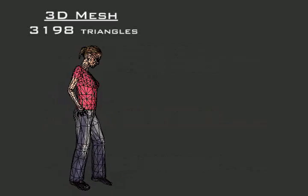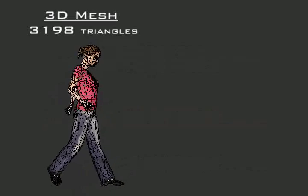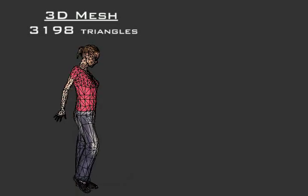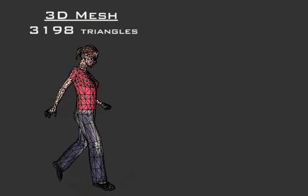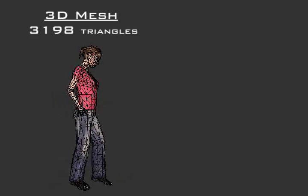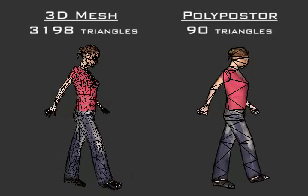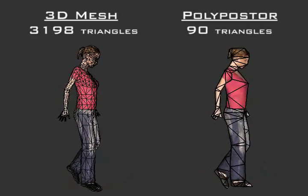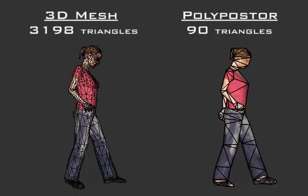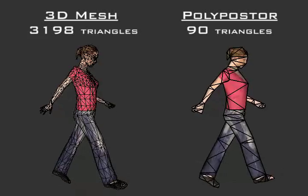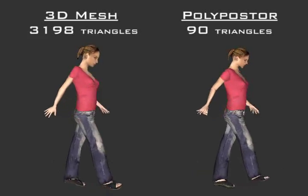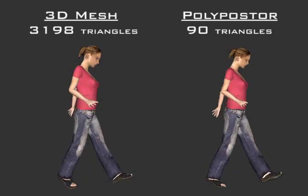When rendering large crowds of 3D animated characters with complex geometry, it is often difficult or even impossible to maintain real-time frame rates. We propose polyposters, a more efficient representation consisting of animated 2D polygons that are pre-computed for multiple viewpoints. Polyposters reduce geometric complexity considerably while maintaining the visual fidelity of the character's appearance and motion.